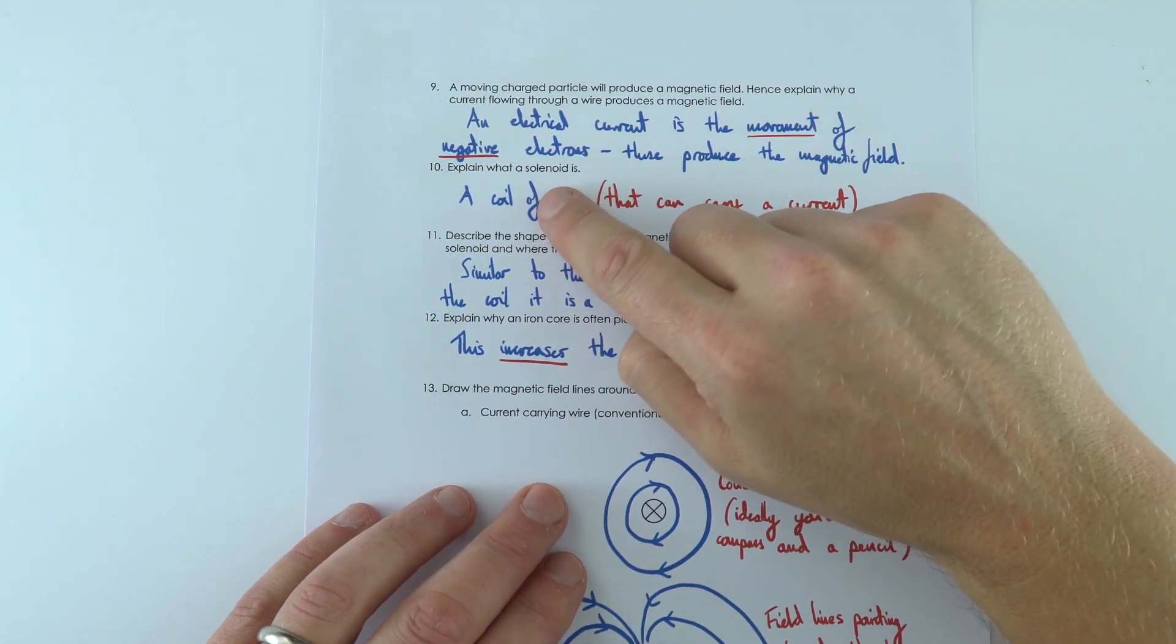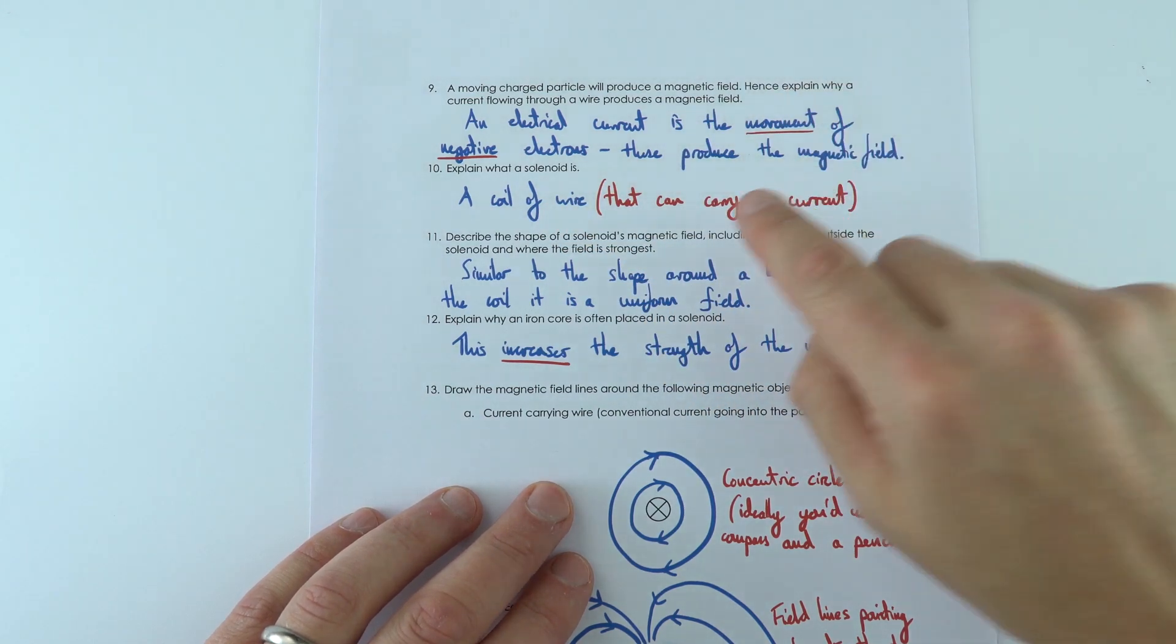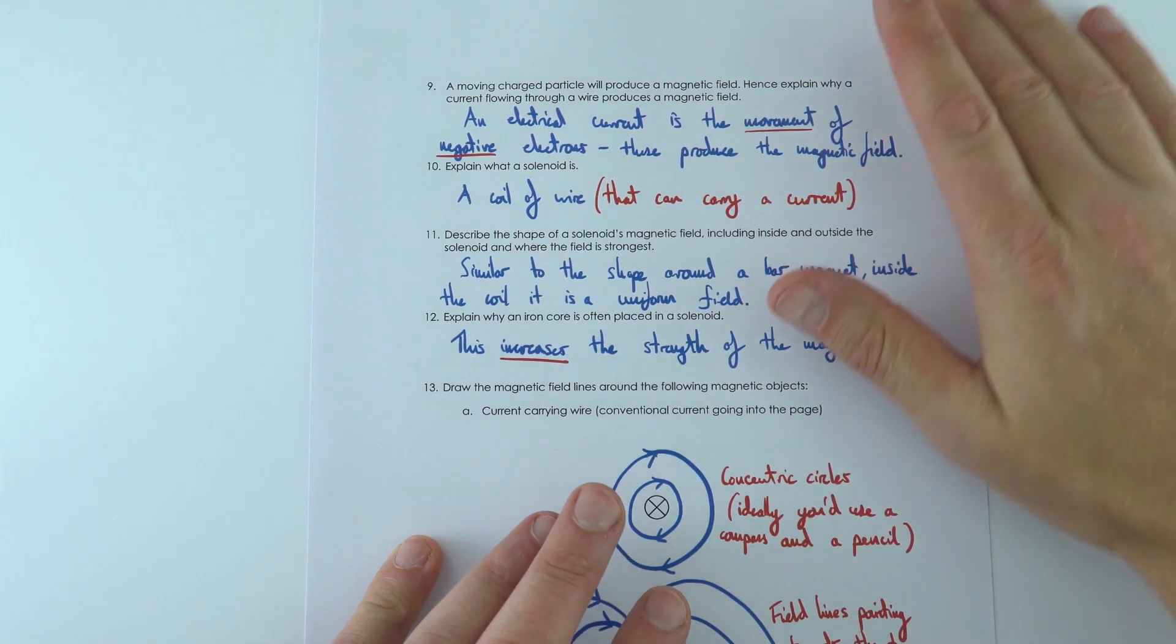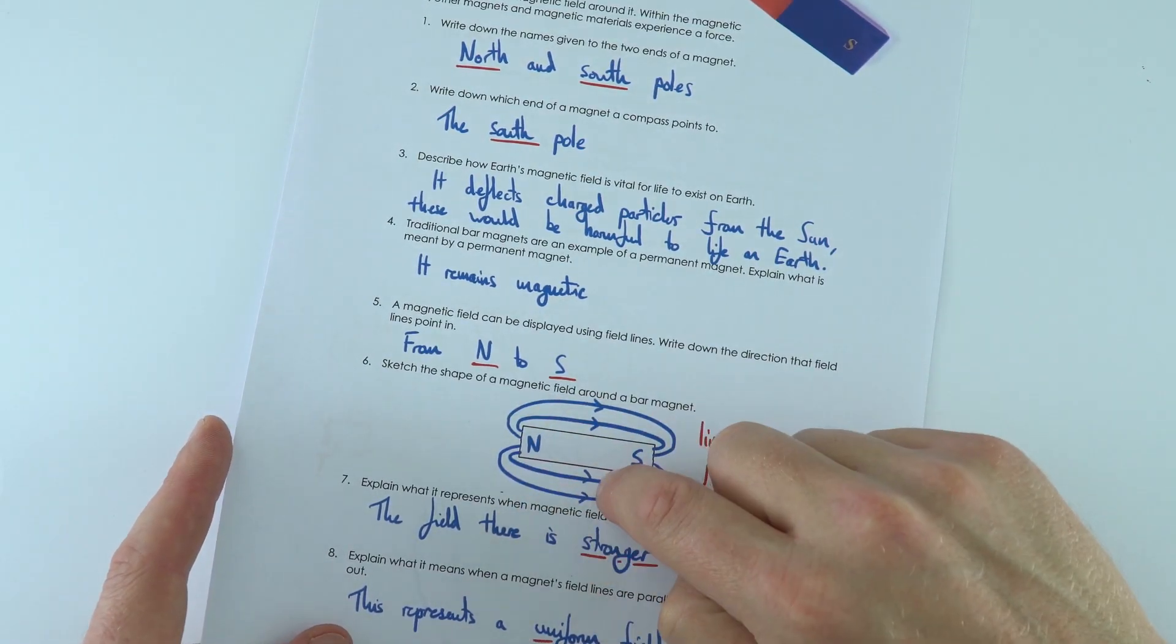We've then got things like a solenoid, which is just a coil of wire that can actually carry a current. And around the solenoid we have a very similar shape to that we saw on the previous page, where we actually look at the shape of the field lines around a permanent magnet.